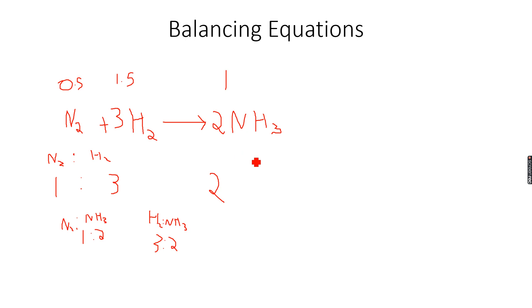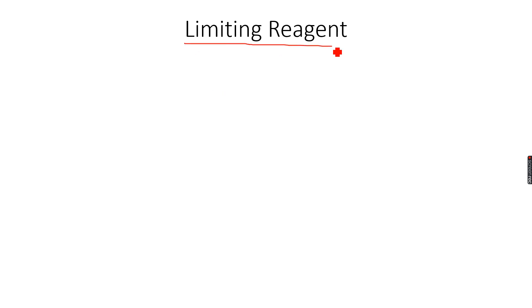So reacting 0.5 moles of nitrogen with 1.5 moles of hydrogen gives 1 mole of ammonia according to the stoichiometry. These coefficients are very important in chemistry because they tell us a lot about the amounts of substances that react with each other. Sometimes, however, we encounter a situation called a limiting reagent.